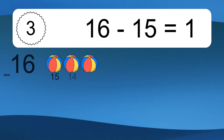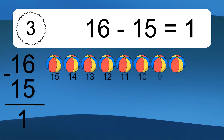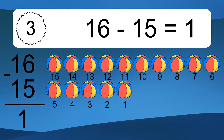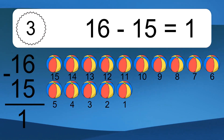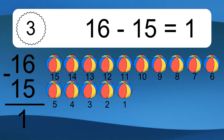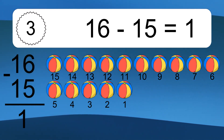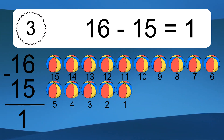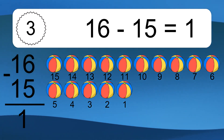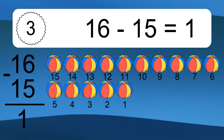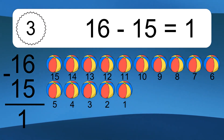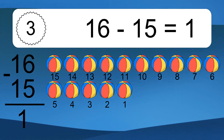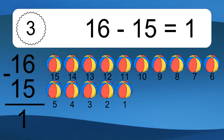16 minus 15 equals what? 16 minus 15 equals 1. Let's count it: 15, 14, 13, 12, 11, 10, 9, 8, 7, 6, 5, 4, 3, 2, 1.